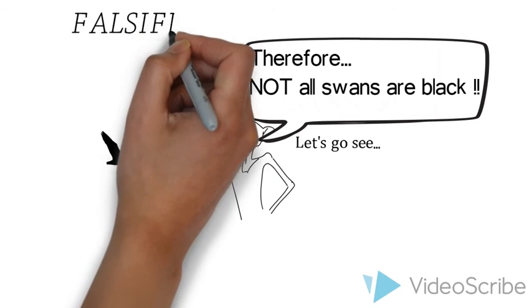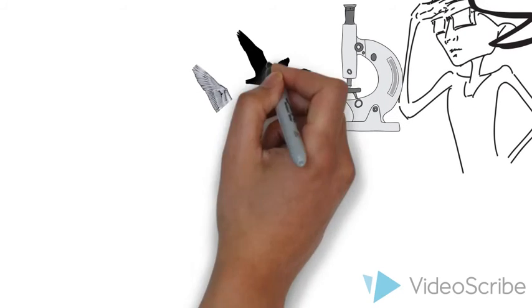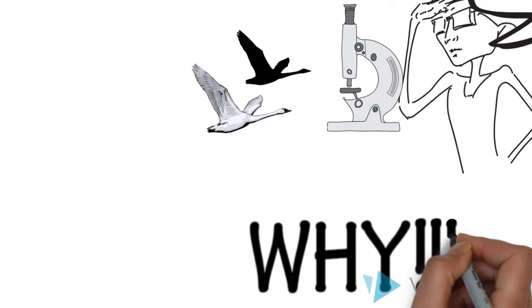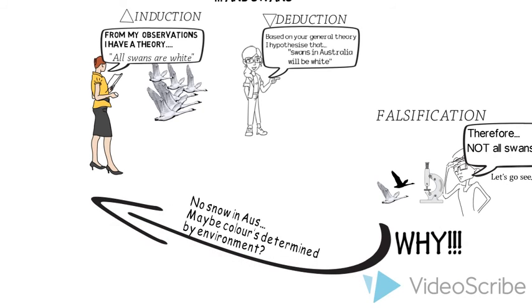That's falsification. That leads us to ask why some swans are white and some are black. Maybe color's determined by the environment. That would lead us to new theories.